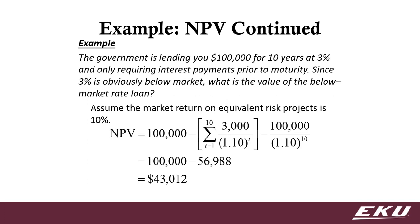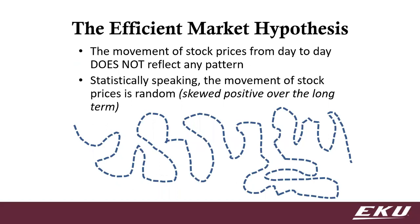Moving on from that refresher to talk about the efficient market hypothesis. Basically, the efficient market hypothesis says there is not a pattern — you can't guess what the stock price is going to do in a day based on what you saw it do in the past. We're going to talk about different forms of that efficiency. Generally, when we talk about this efficiency, we're talking about how efficient the market is at taking information and getting that reflected into the price.